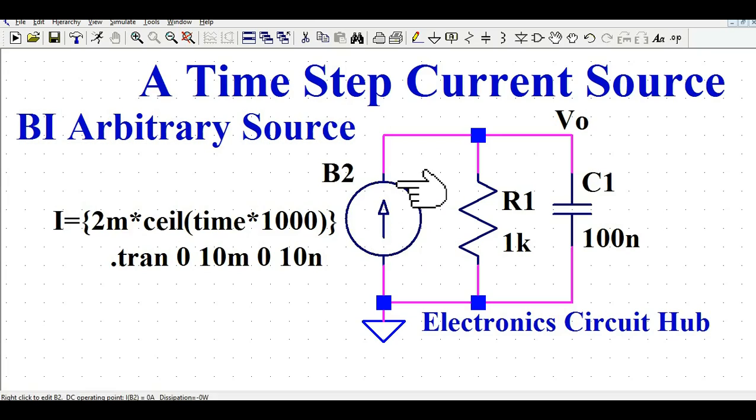Let me repeat it again. This circuit will generate arbitrary current source of 2 milliampere every after 1 millisecond. That means if time t equals 0, your current is 2 milliampere. So at time t equals 1 millisecond, your current will be in the step of 2 milliampere increment.